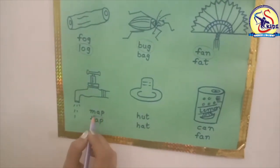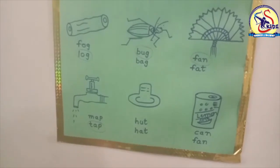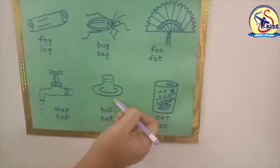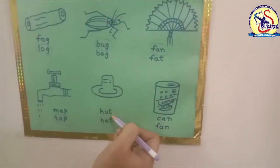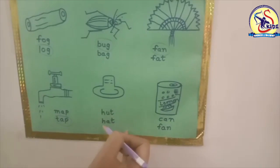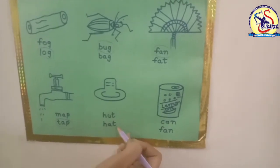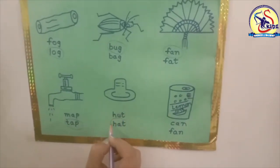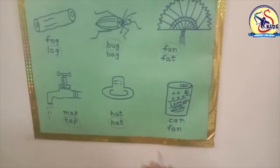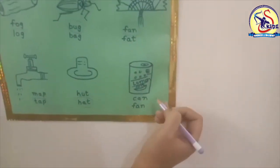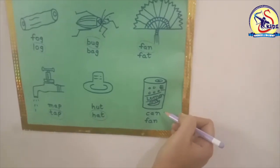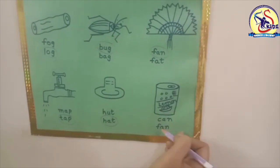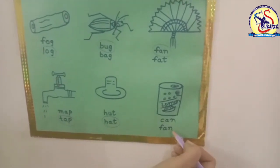The correct word is T-A-P, tap. Our next picture — hat. This is a hat. H-U-T, hut, or H-A-T, hat. We have to circle the correct word, and the correct word is hat.